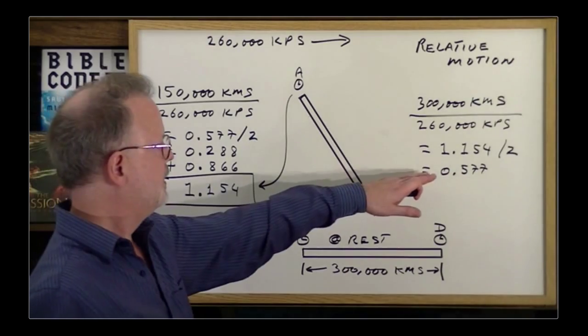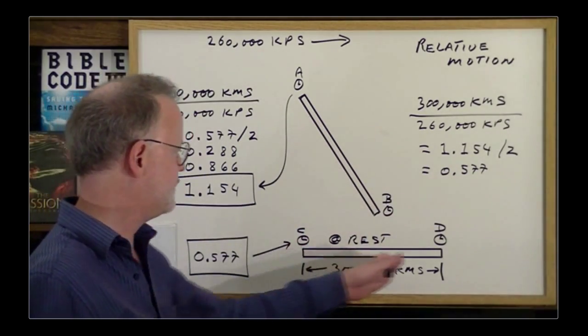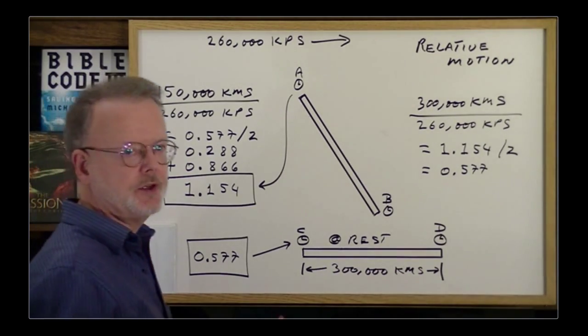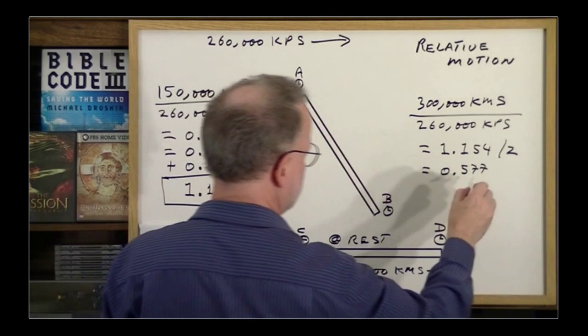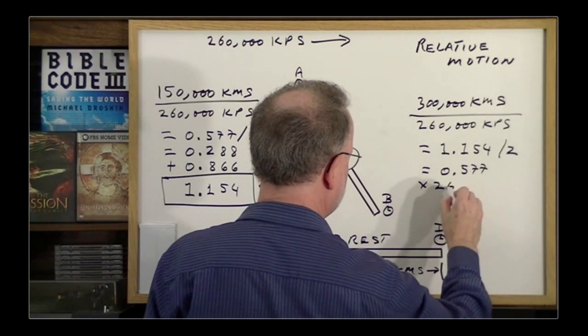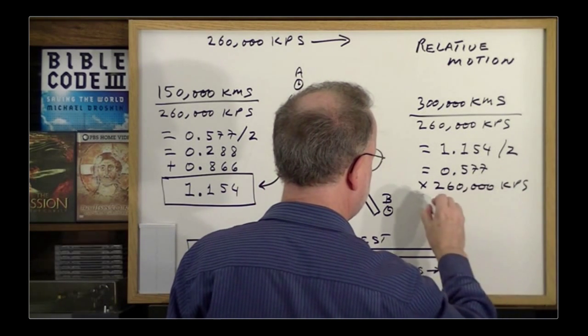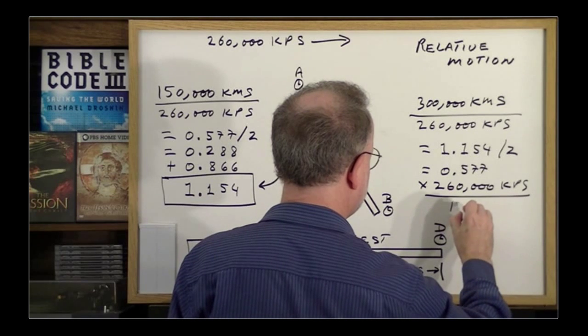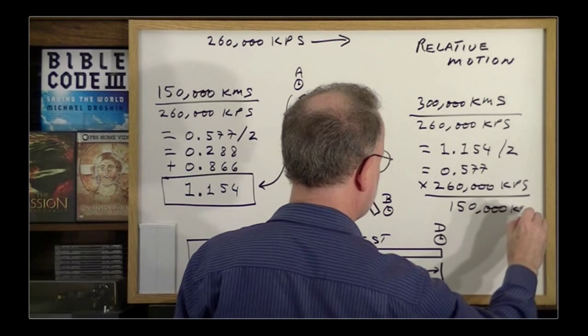So from his point of view, while traveling at this speed, it took him that long to cover this distance. Therefore, he realizes all he has to do is multiply that times the time period, and that will tell him exactly what distance he had crossed. The outcome is 150,000 kilometers.